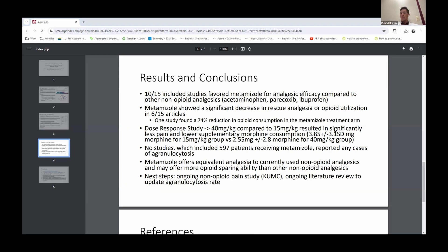Metamazole showed, and importantly, one of the more exciting results, a significant decrease in rescue analgesia or opioid utilization in six of our 15 articles. One of those studies found a 74% reduction in opioid consumption, so actually seeing a potential opioid-sparing capacity of using metamazole. Additionally, we also saw a good dose response. There was a dose response study included in our paper where a 40 milligram per kilo dose compared to a 15 milligram per kg dose had less pain and lower supplementary morphine, again highlighting that opioid-sparing effect. No studies out of all 15, almost 600 patients receiving metamazole, reported any case of agranulocytosis including at those varying higher dose ranges. Metamazole offered equivalent analgesia to currently used non-opioids like acetaminophen or paracoxib and ibuprofen, but may offer more opioid-sparing ability than other non-opiates.